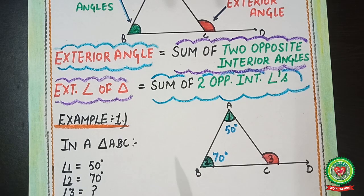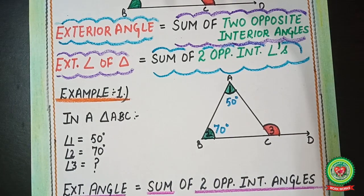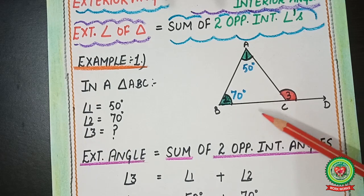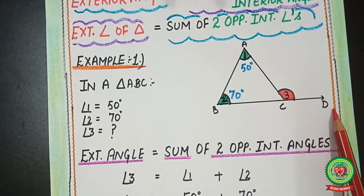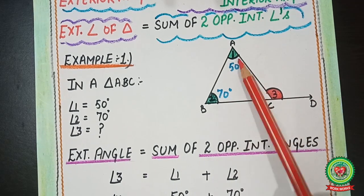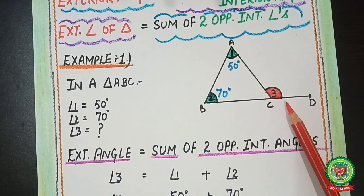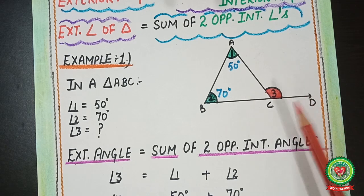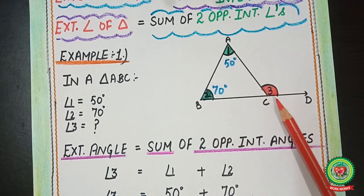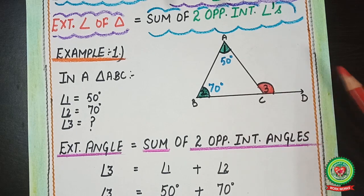Now let's take an easy example to understand this property better. In example number one, a triangle is shown and the BC line has been extended to point B, creating an exterior angle. The two interior angles are already given. We need to find the exterior angle, which is angle three. We give numbering to the figure: angle one, angle two, angle three.